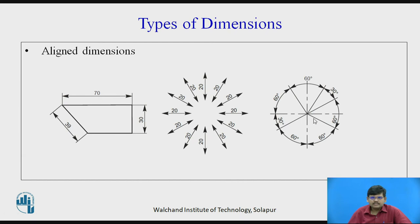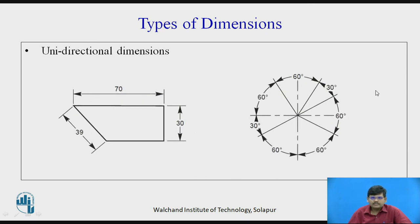Coming to types of dimensions. The first type shown on screen is aligned dimensions. As the shape or inclination of the boundary of the object changes, you incline the dimension value accordingly — it can be inclined, straight, or exactly vertical. Here the value 20 is inclined in different directions, and the value 60 is also inclined in different directions. These are called aligned dimensions — they align themselves to the boundary of the object. Then we have unidirectional dimensions, where regardless of the inclination of the object boundary, all dimensions are given exactly vertically, as you can see on screen.